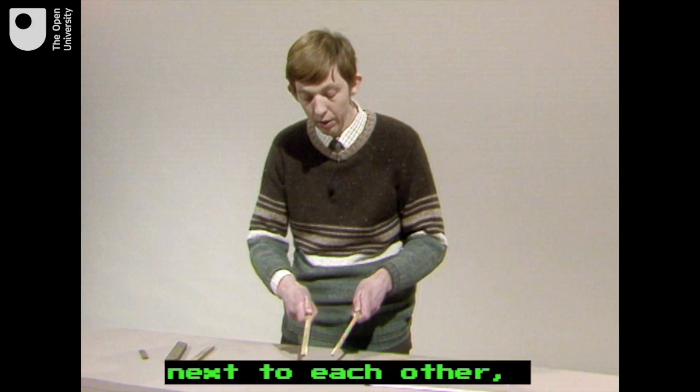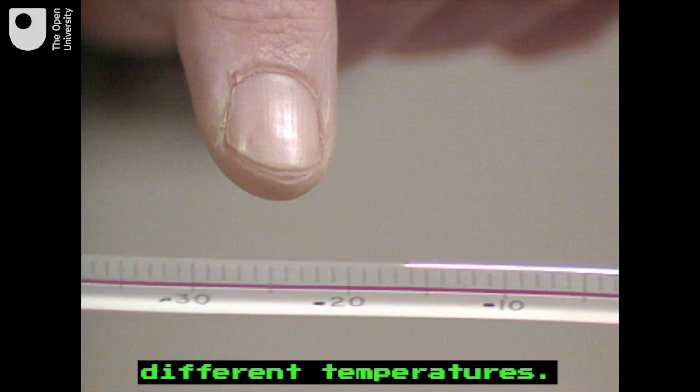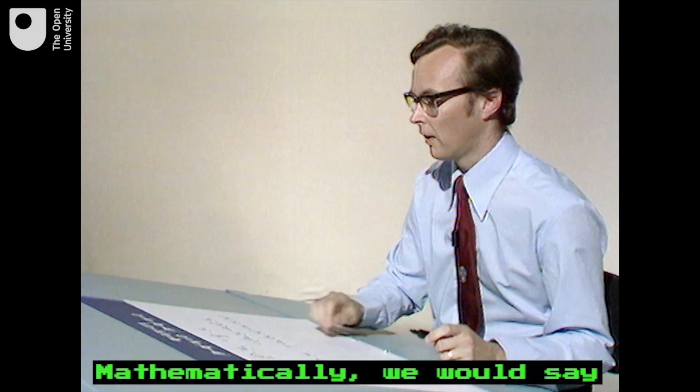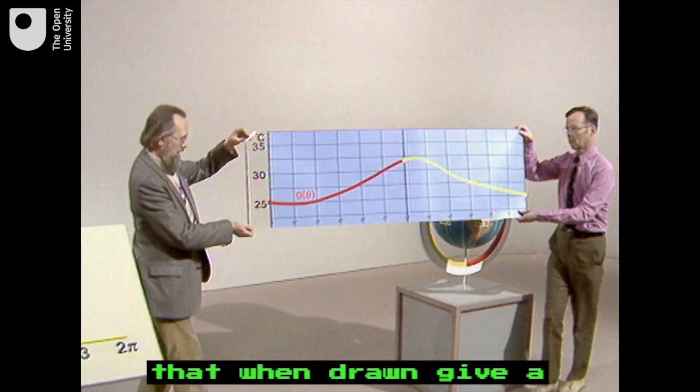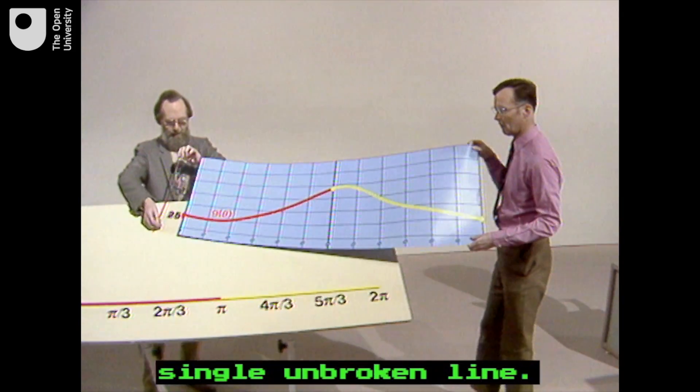We can't have two points next to each other with wildly different temperatures. Mathematically, we would say that temperature is a continuous function. These are functions that when drawn give a single unbroken line.